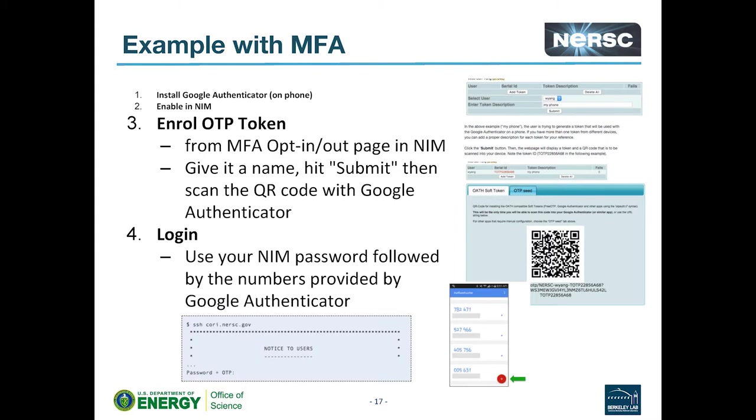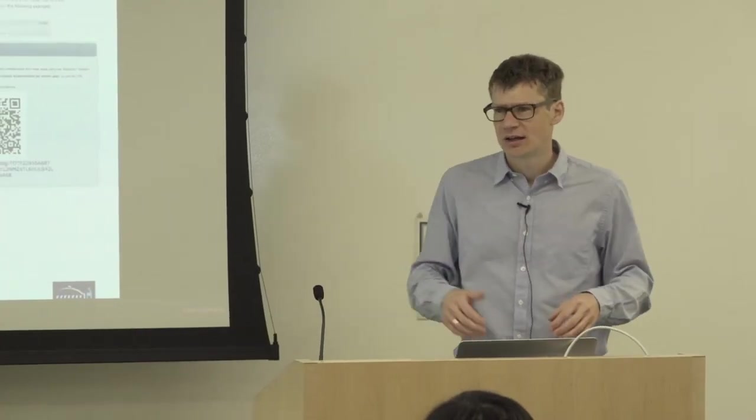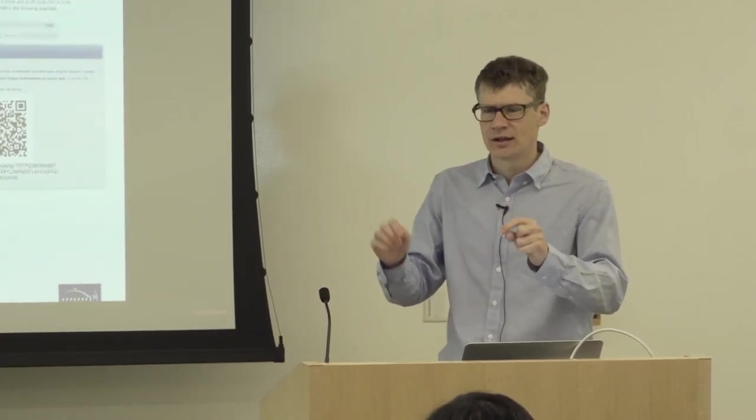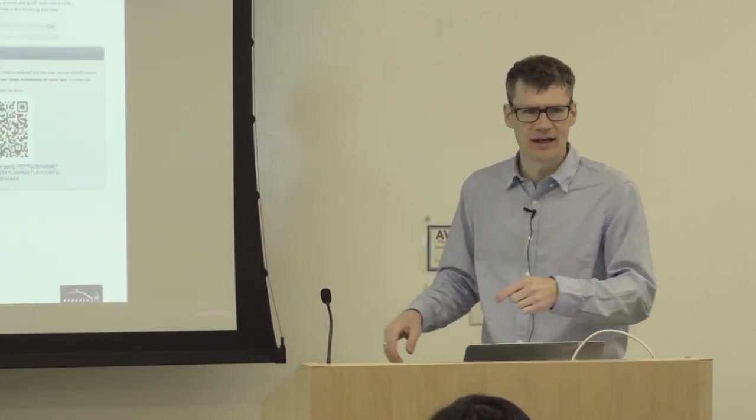And that's literally what you type. You type your NIM password, and then you look at Google authenticator and it will have six numbers on the screen. And then you type those six numbers, one, two, three, four, five, six, and then enter.